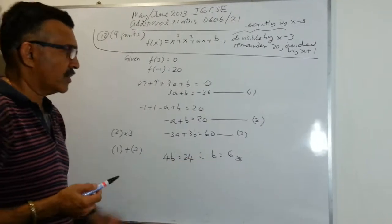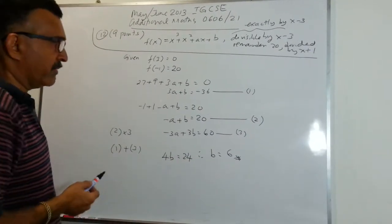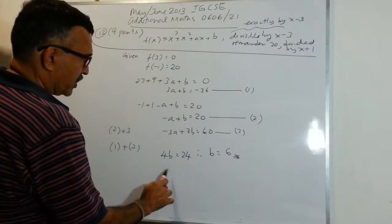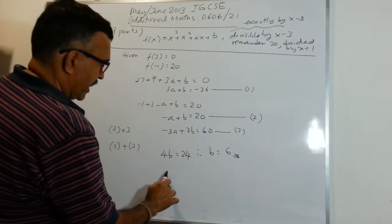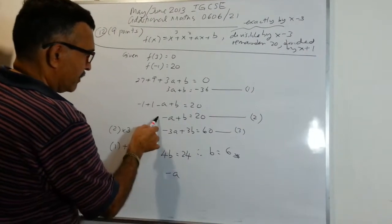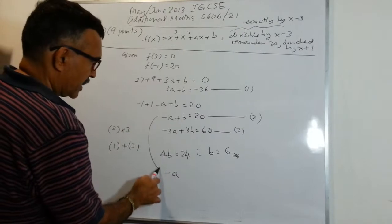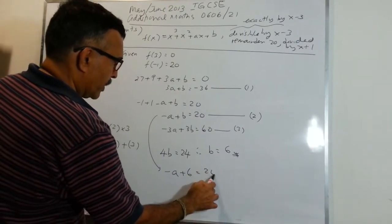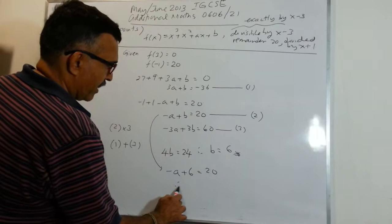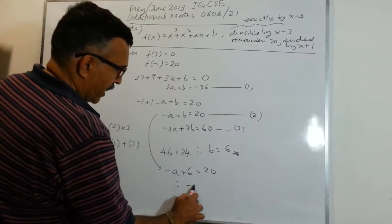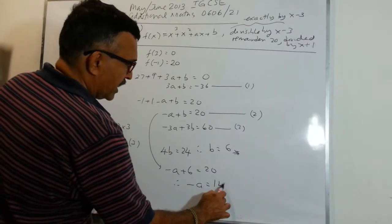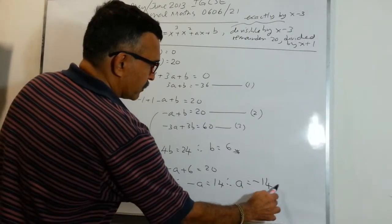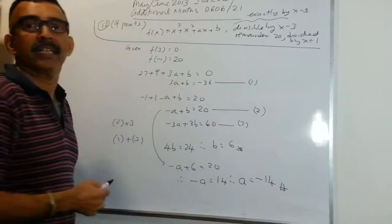Once we have b = 6, we can easily find a. Substituting b = 6 into equation 2: −a + 6 = 20, therefore −a = 14, and so a = −14. And we are done.